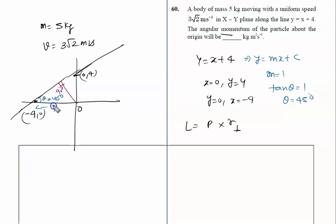This distance is given by 4, so we can easily calculate this perpendicular distance. r perpendicular is given by 4 sin 45°, so it is 4 × 1/√2. This is 2 × 2 divided by √2, which equals 2√2.